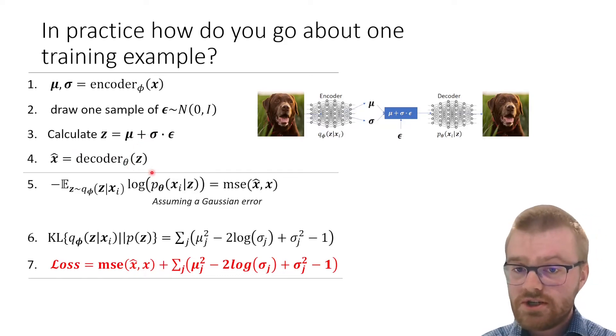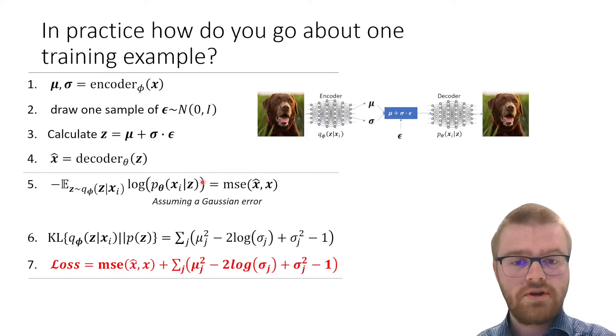Then the loss function is actually rather simple. If we assume a Gaussian error, we will get a mean squared error between x hat and x. The KL divergence, if we have chosen z to follow a normal distribution of zero and one, looks as follows.